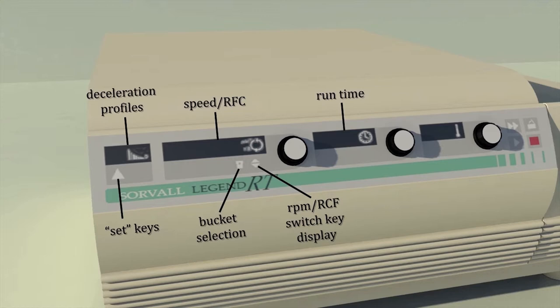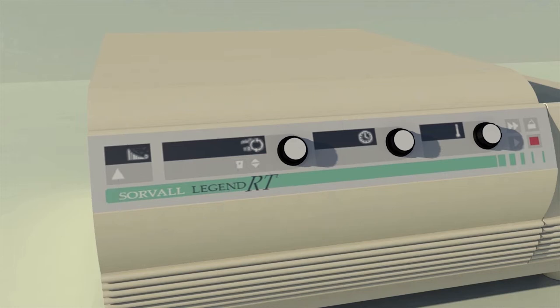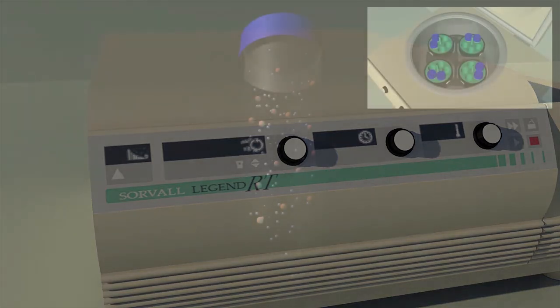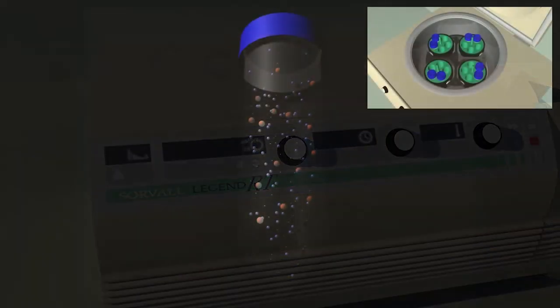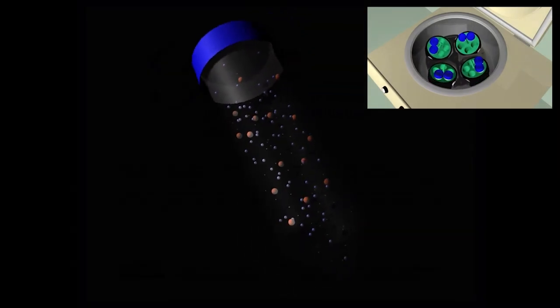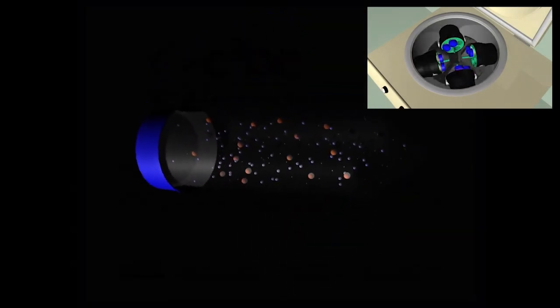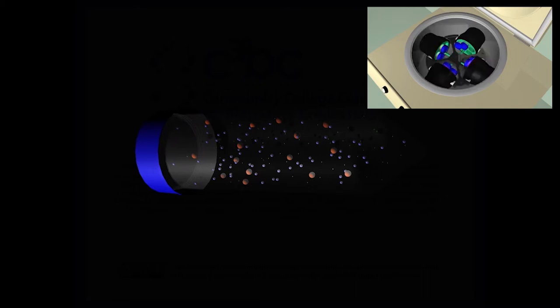Now that we have decided the size of tubes and mounted them in the centrifuge and set our run parameters in terms of speed we will spin them at and the time that we will allow the centrifuge to run, we push the start button and allow the rotor to start turning. The beauty of animation allows us to take a look at what's going on inside the centrifuge as the rotor turns.